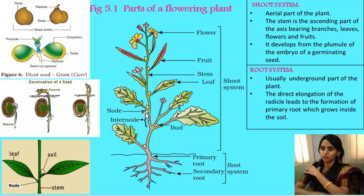What is a node? A node is a region or point on the stem from where a leaf or a branch arises. What is an internode? The distance between two successive nodes is known as an internode. The stem bears two types of buds. At the apex of a branch or the apex of the stem, there is a bud called the apical bud or terminal bud. Because of this apical bud, the stem continues to grow.